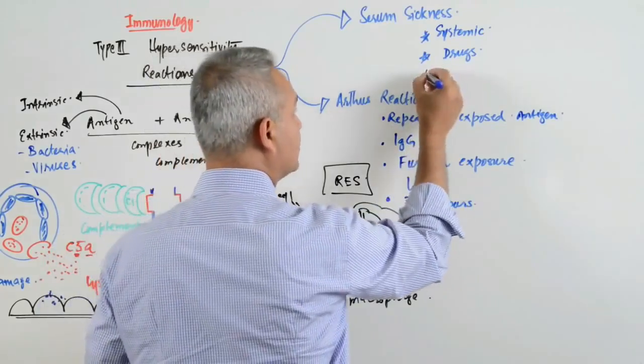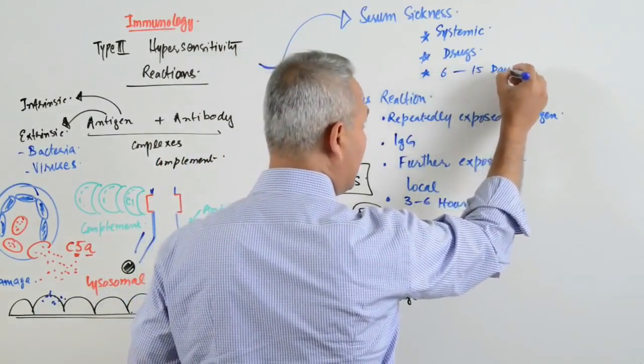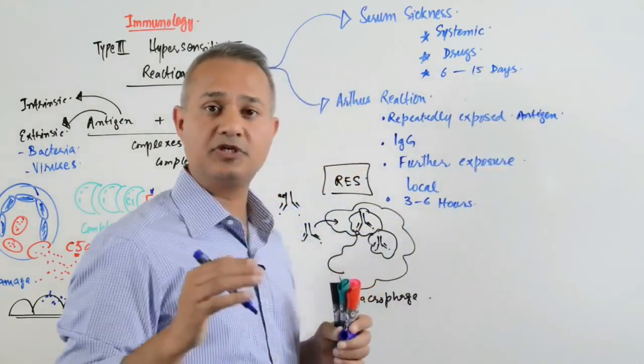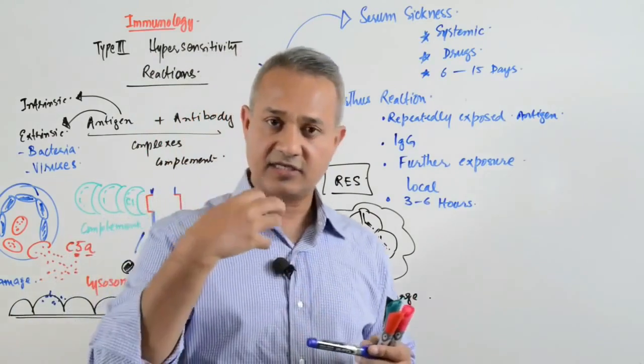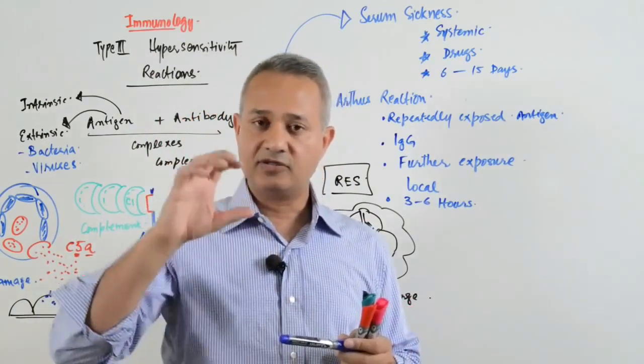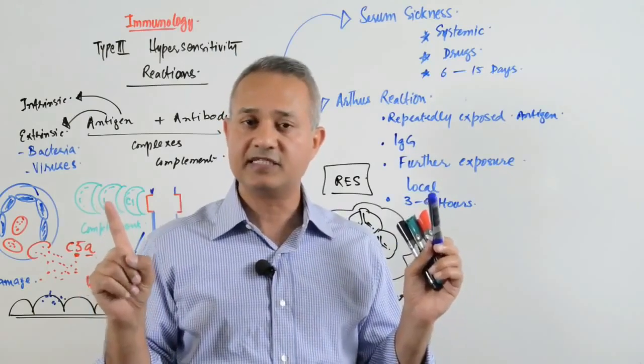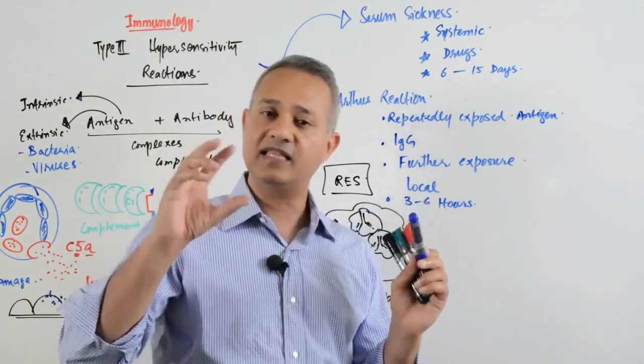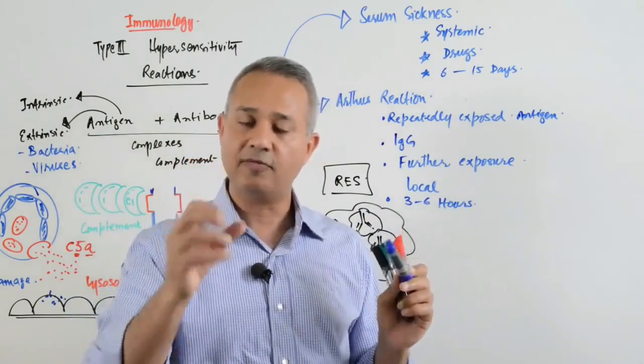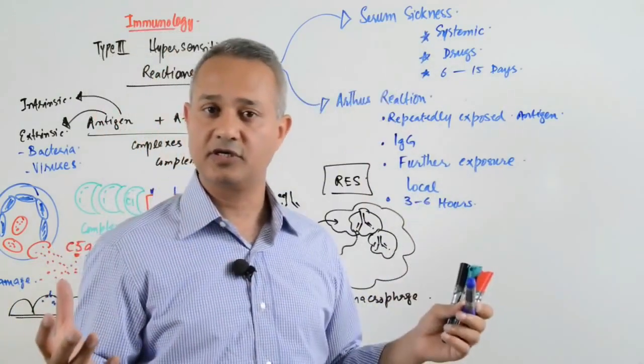Serum sickness occurs within 6 to 15 days after antigen exposure. Why? Because when the antigen enters the body, it allows antibodies to be developed. Antibody development takes 6 to 15 days. Once antibodies develop, only then do antigen-antibody complexes form, complement activation occurs, and systemic issues arise.